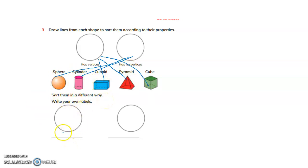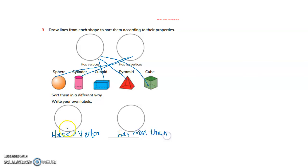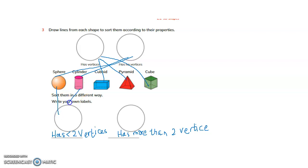Sort them in a different way — write your own label. For example: 'has less than 2 vertices' and 'has more than 2 vertices.' A sphere and cylinder have no vertices, so they go under 'has less than 2 vertices.' A cuboid has more than 2 vertices. A square-based pyramid and cube also have more than 2 vertices. So this is another way of sorting the shapes.